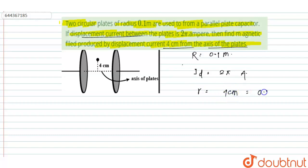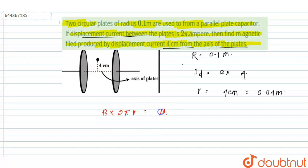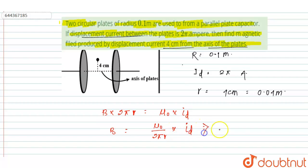From Ampere's law, B·dl equals μ₀ times the displacement current id. The value of dl is 2π times small r, so we get B times 2πr equals μ₀ times id. Therefore, we can write the value of B equal to μ₀ divided by 2πr, multiplied by id.